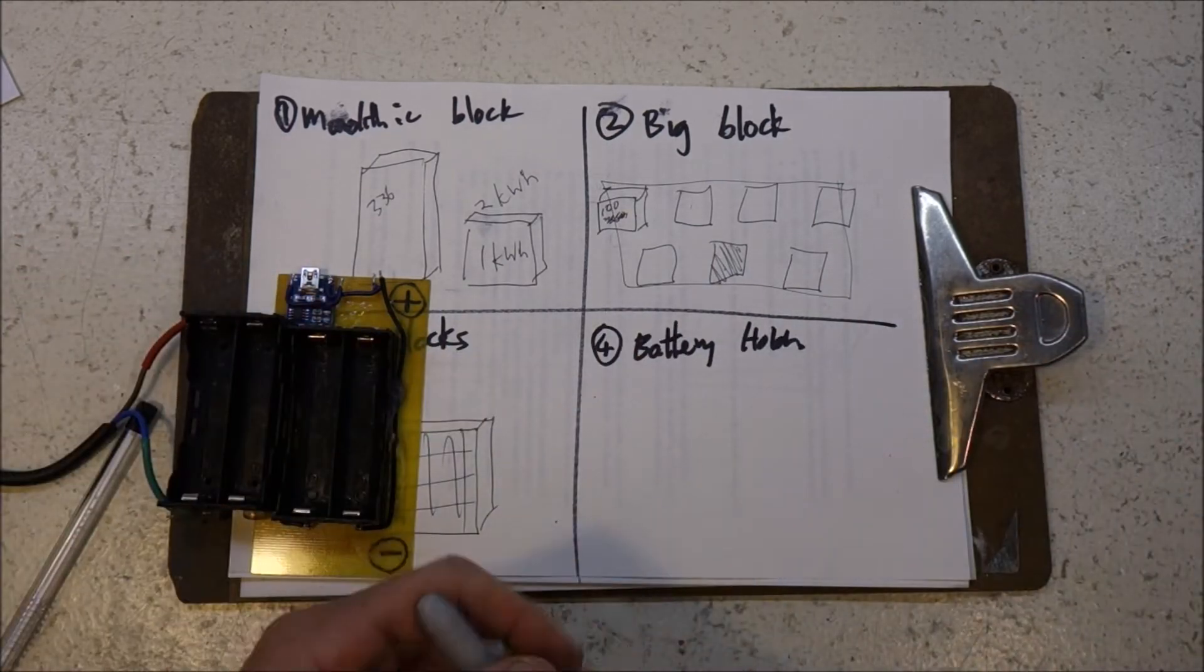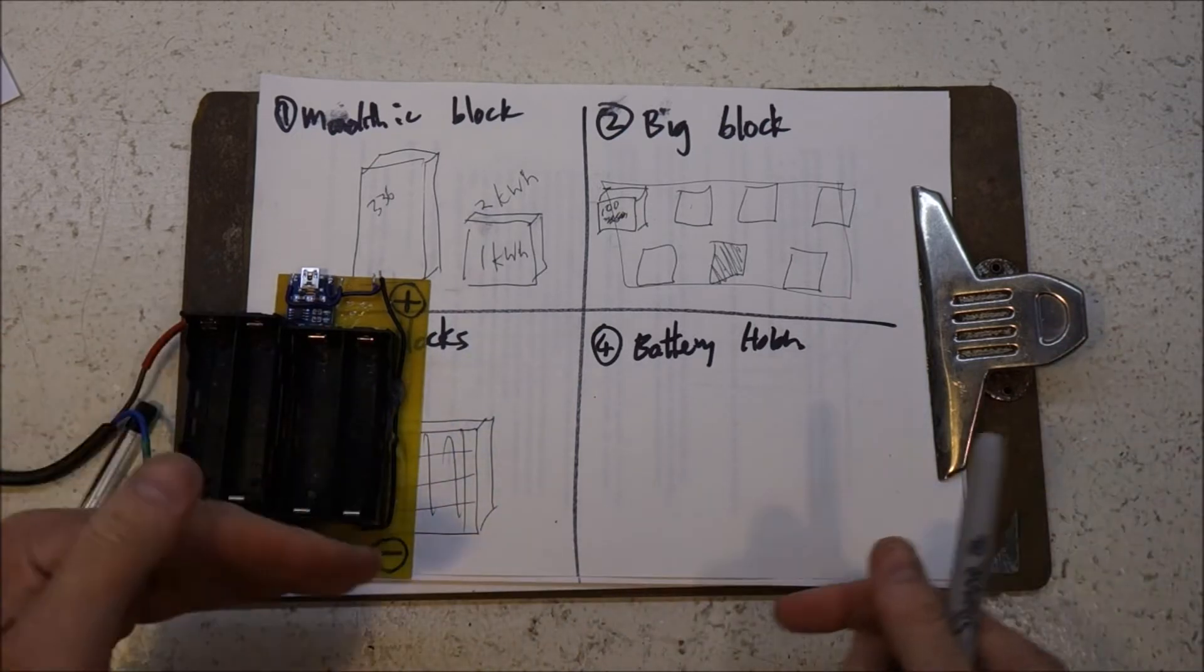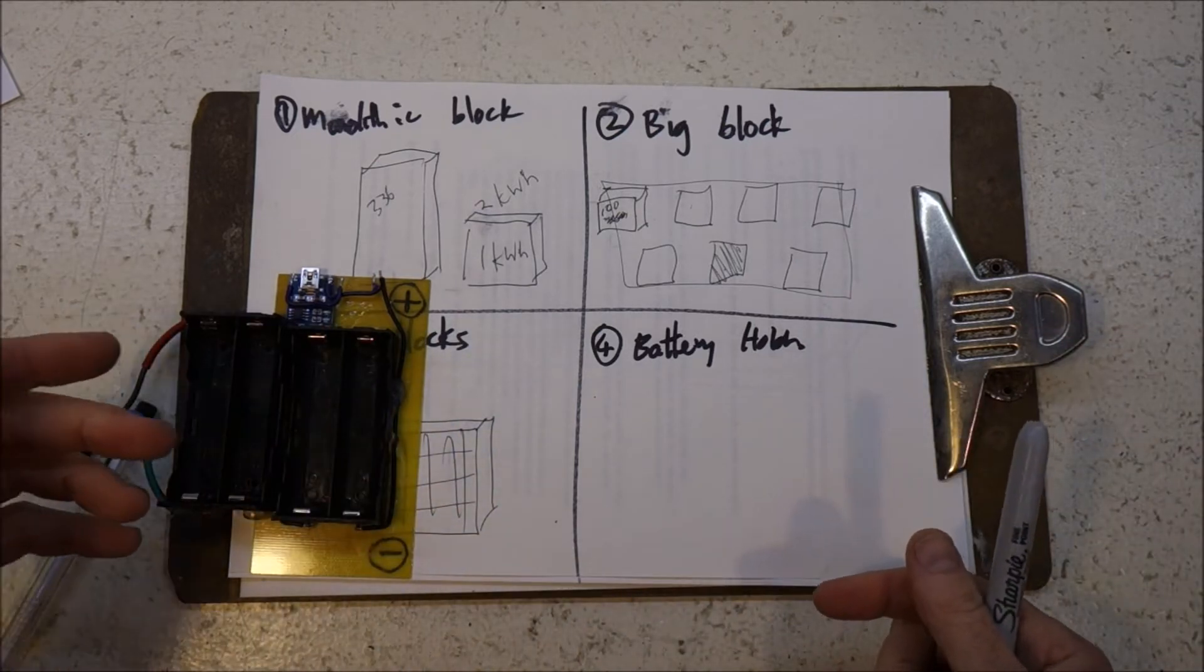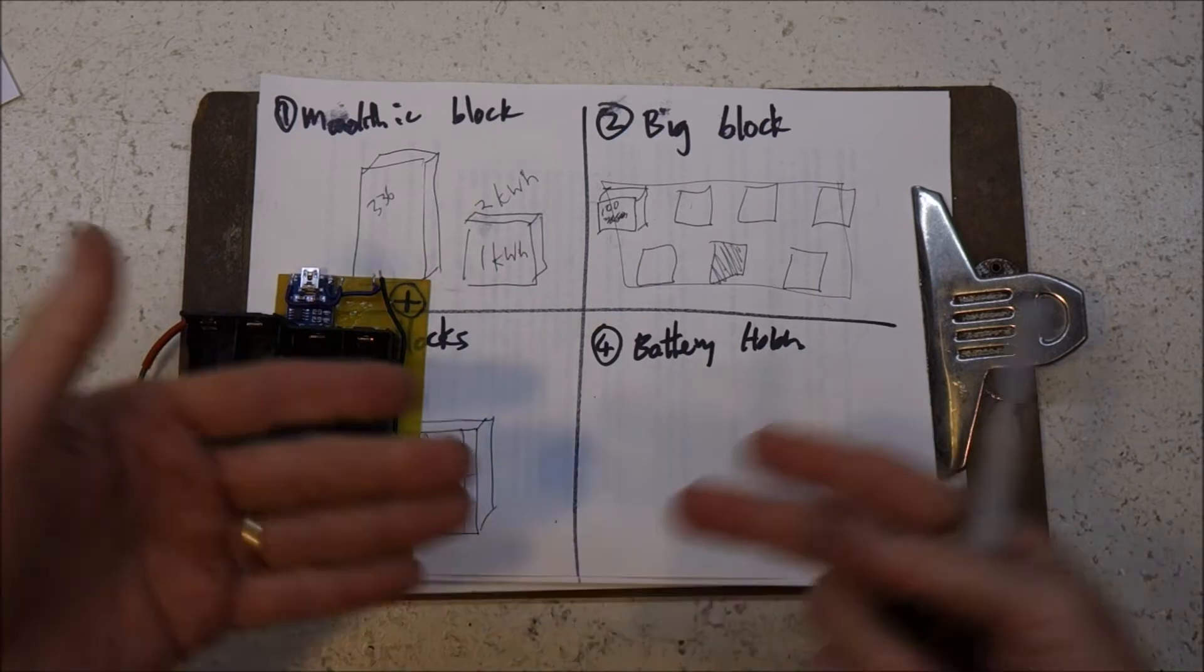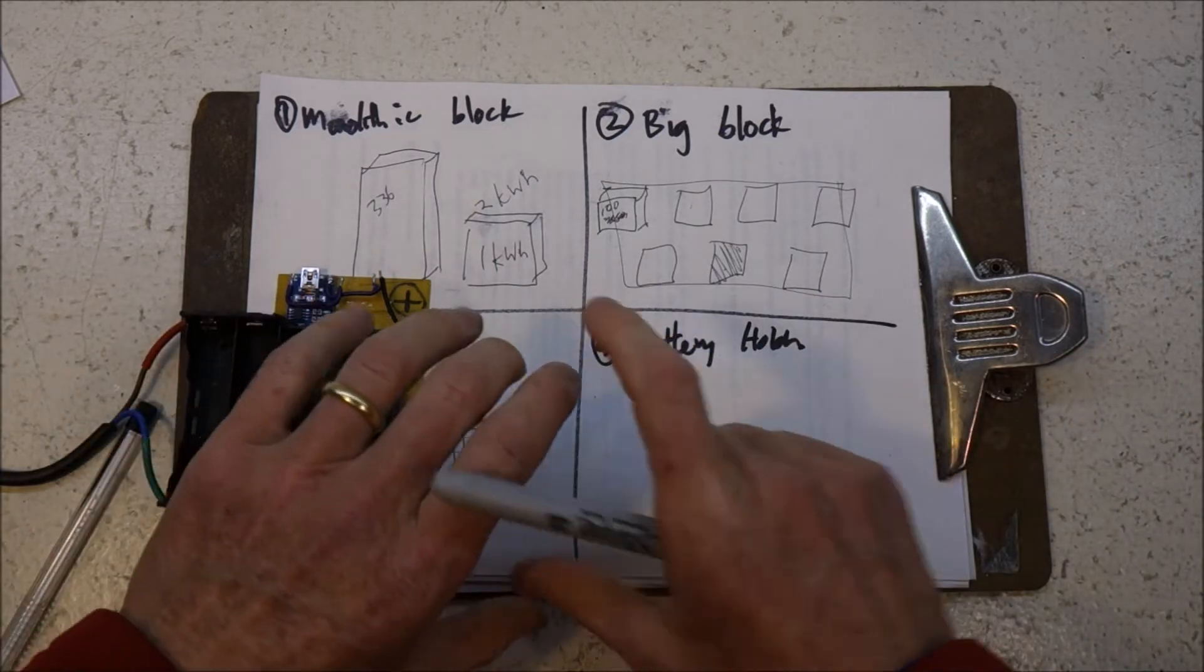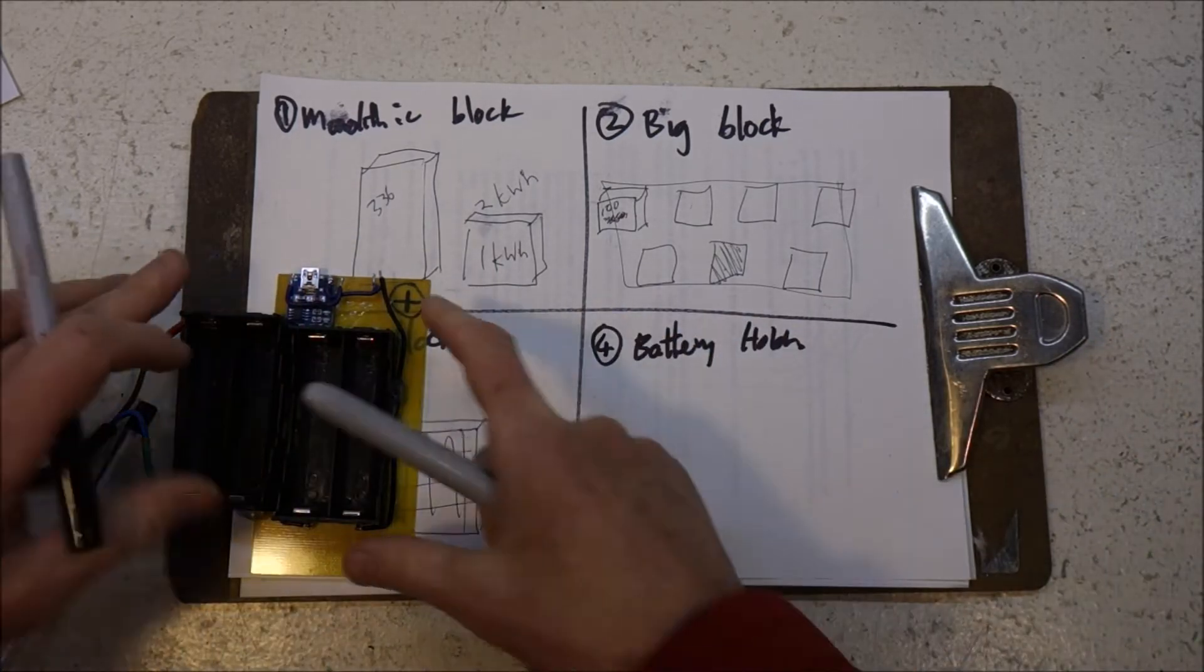And then, of course, you could make yourself a shelving system that consisted of lots of 1 or 2kWh shelves and Bob's your uncle.